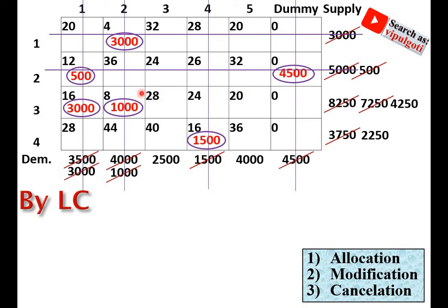Select the minimum value from the remaining 4 cells — this one is the minimum, so allocation is made there. The minimum of the two corresponding values is 4,000, so 4,000 is allocated. Supply and demand are modified and that row is cancelled.